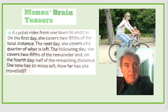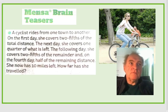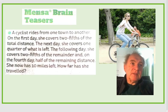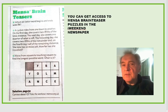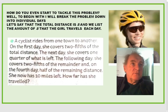Hello, good morning. A cyclist rides from one town to another. On the first day she covers two-fifths of the total distance. The next day she covers one-quarter of what is left. The following day she covers two-fifths of the remainder. On the fourth day, half of the remaining distance. She now has ten miles left. How far has she travelled? This is one of the Mensa brain teaser problems you can get from the i newspaper at weekends. How do you even start to tackle this sort of problem?